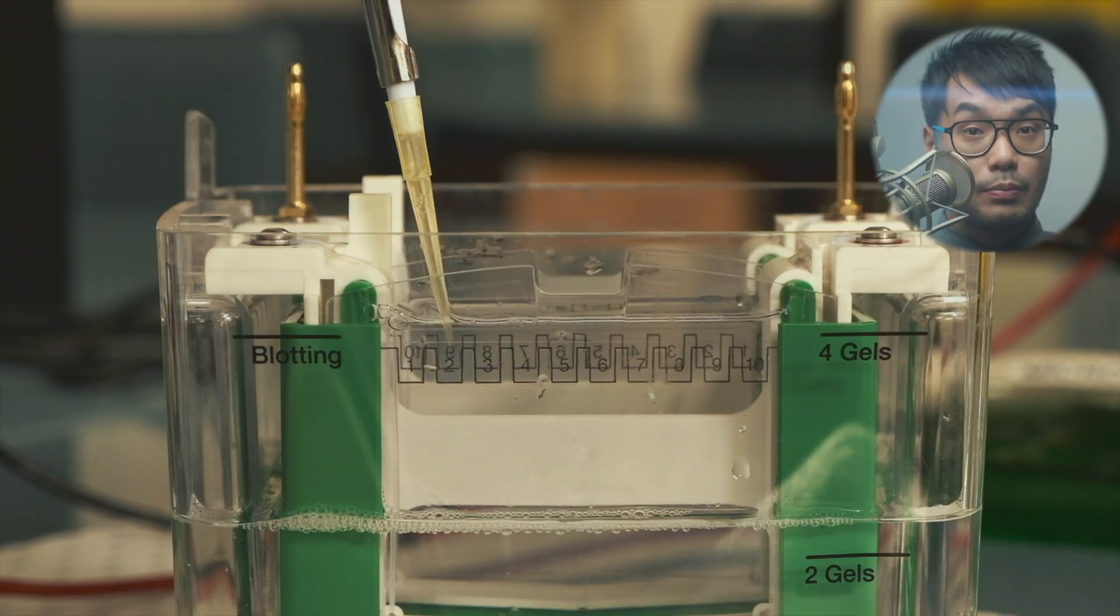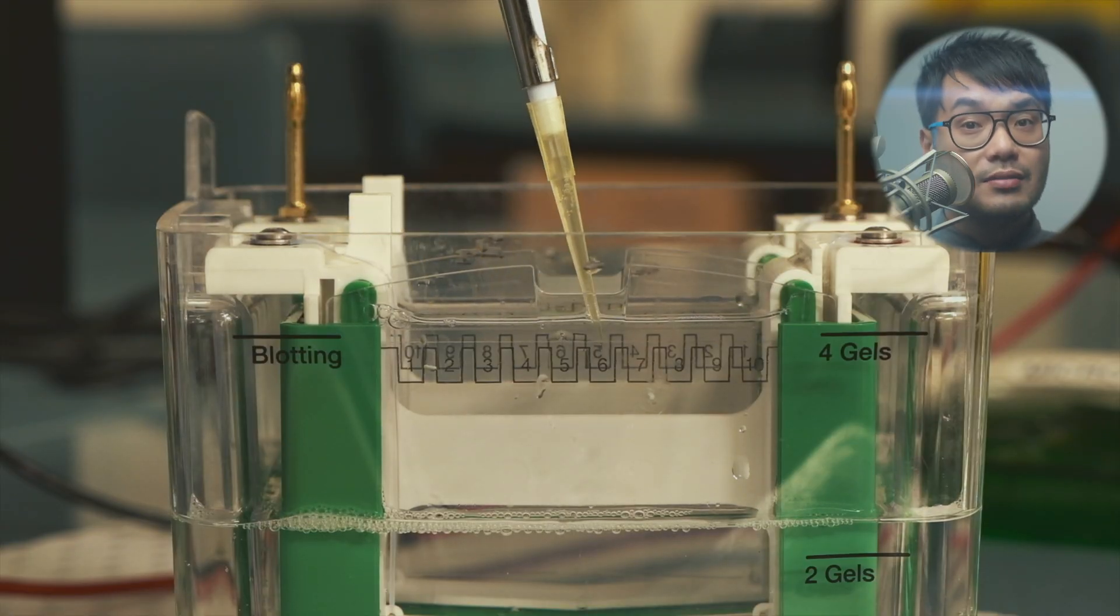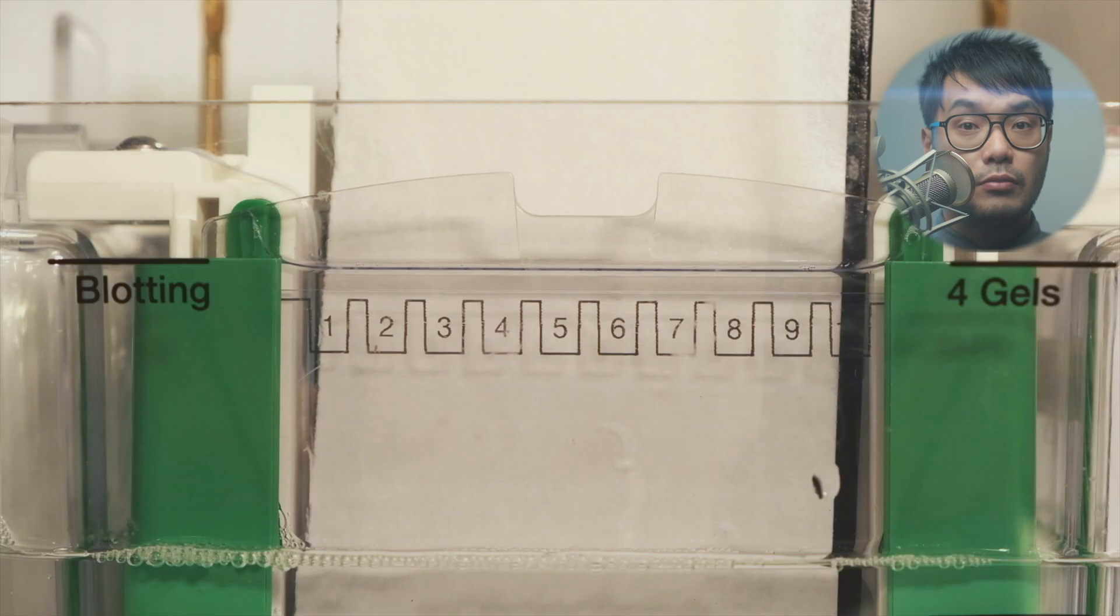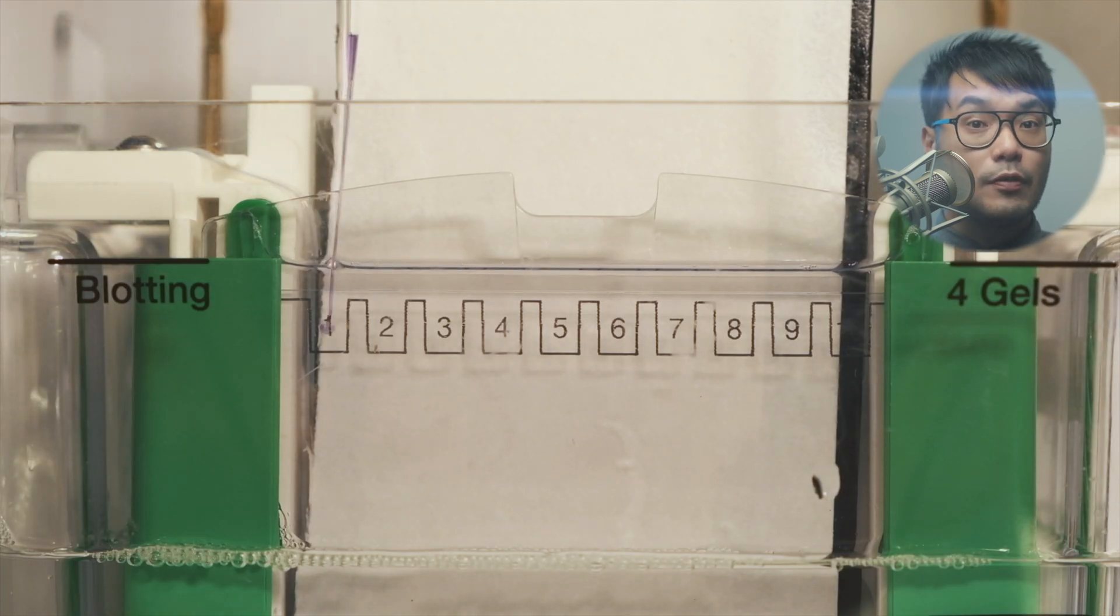The wells need to be flushed out before any sample is added to them. They may contain air bubbles or glycerol, which may affect how neatly your samples go into the well. Protein ladders and samples mixed with a loading buffer are then added in sequence to the gel.